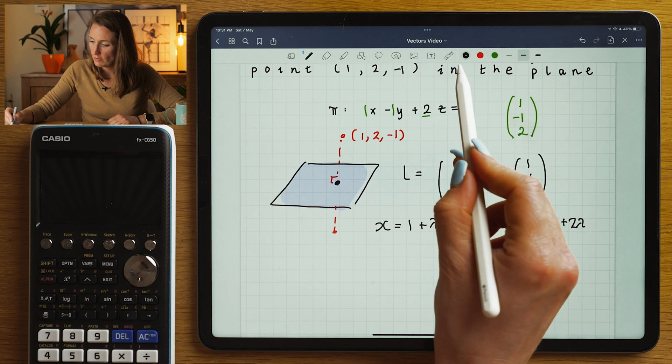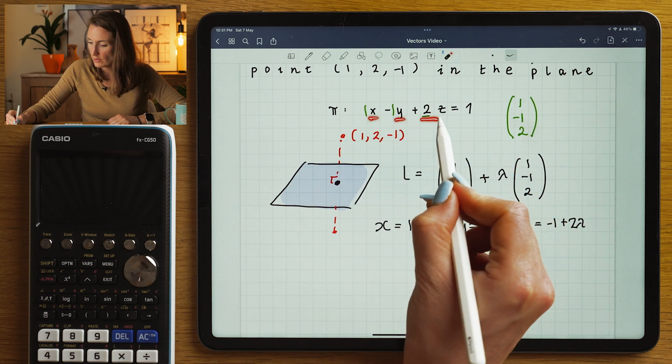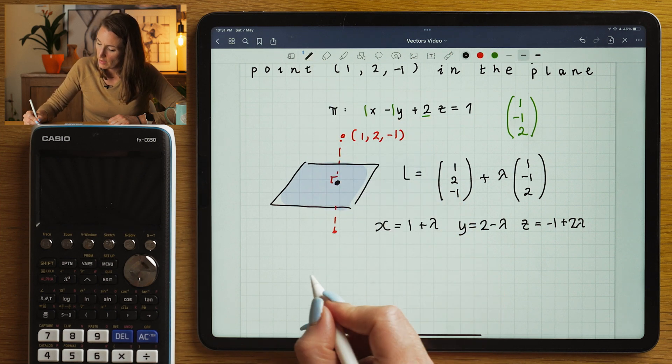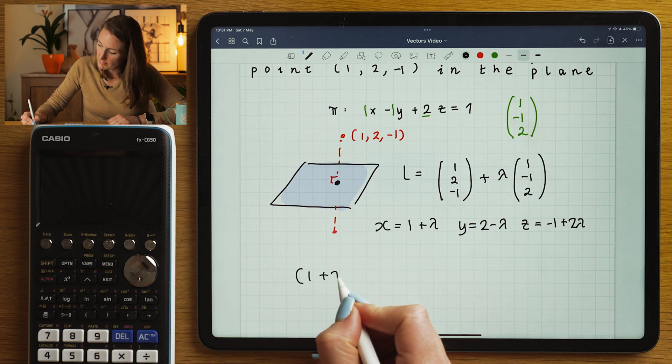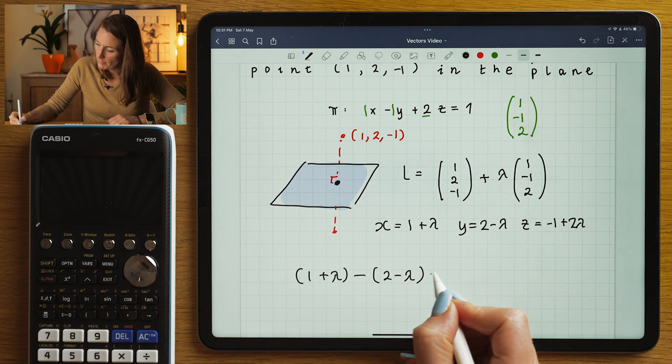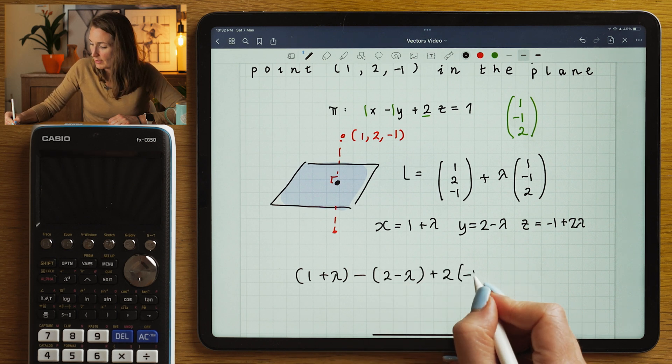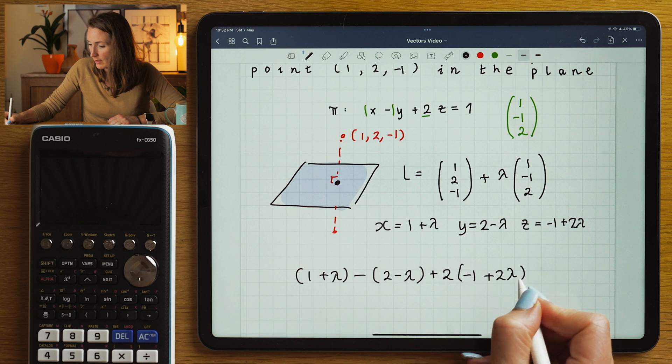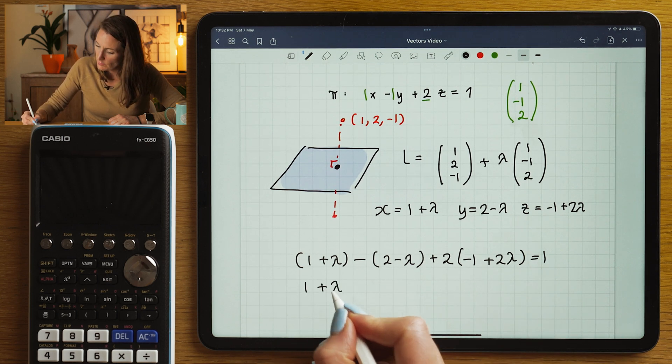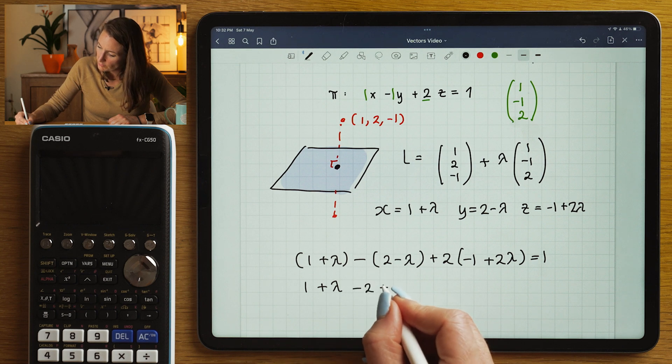And then I'm going to substitute those x, y, and z equations in terms of lambda into my plane. So I've got 1x, so 1 + lambda - y, 2 - lambda + 2z, -1 + 2 lambda equals to 1. Let's multiply that out and see what our value of lambda would be.